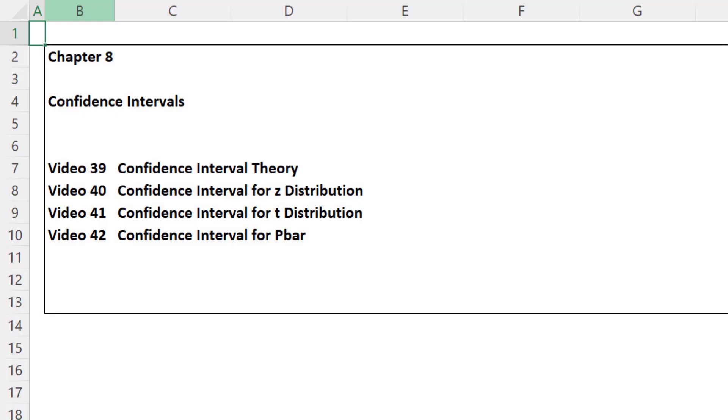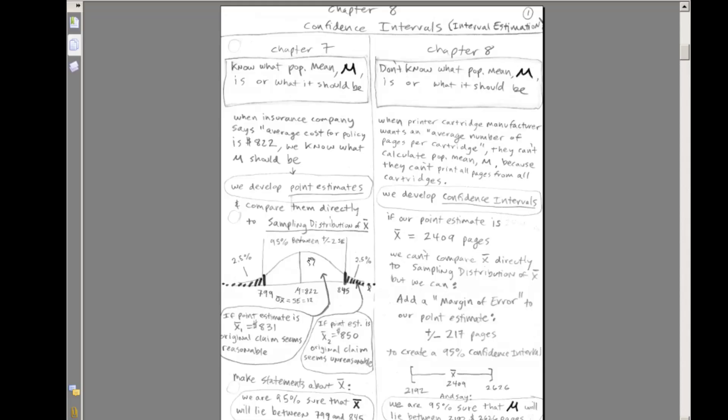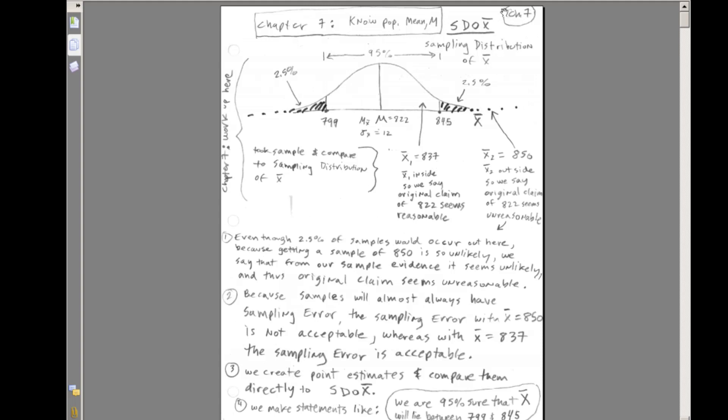We're in chapter 8. We're going to talk about how to construct confidence intervals. Here are our four main topics that we'll cover. But before we jump into chapter 8, I want to jump over to the PDFs and compare what we did in chapter 7 and chapter 8. The PDFs start at page 1, but I have two pages before that that don't have a page number.